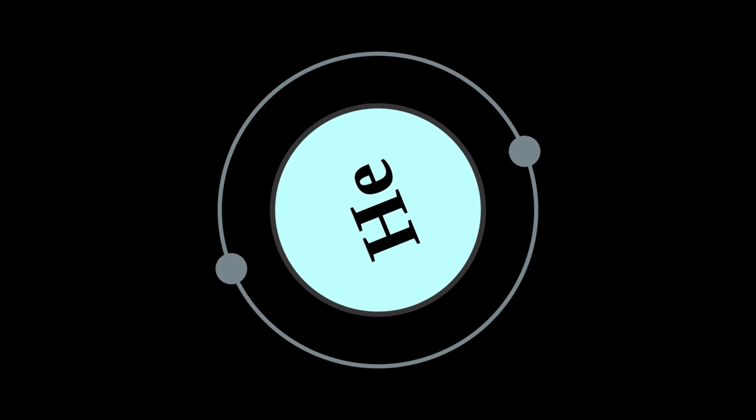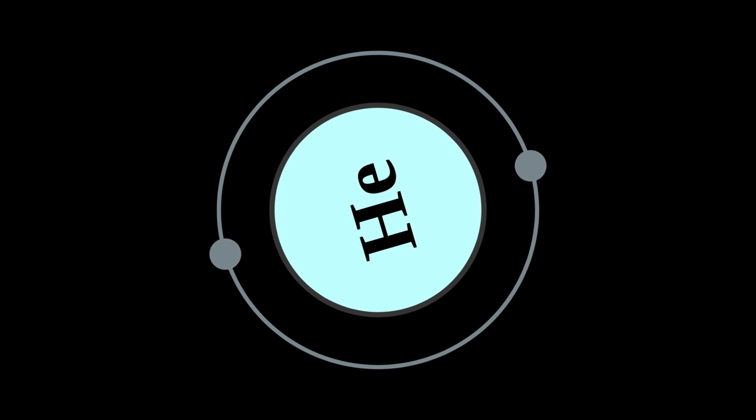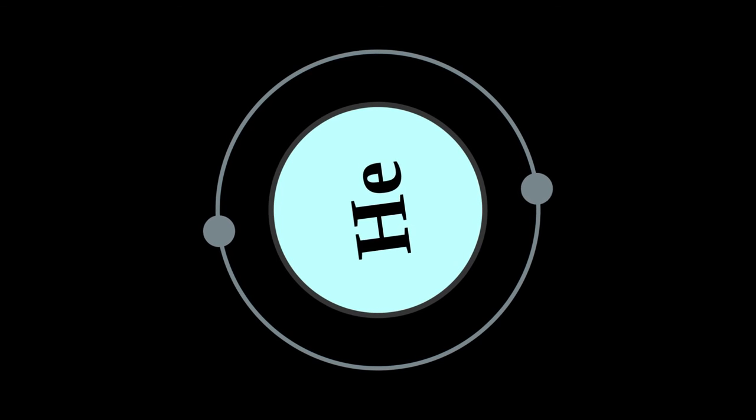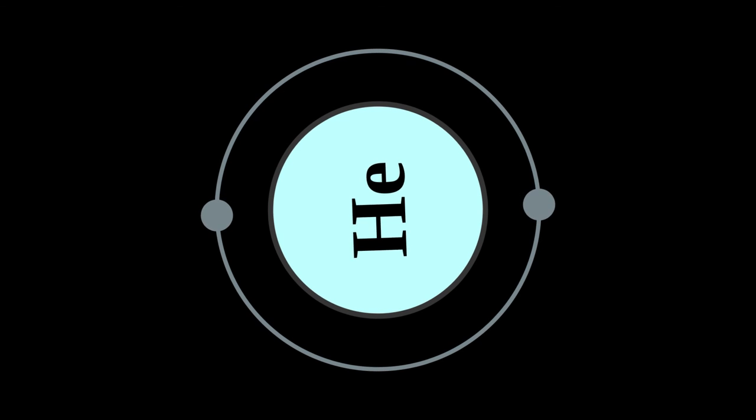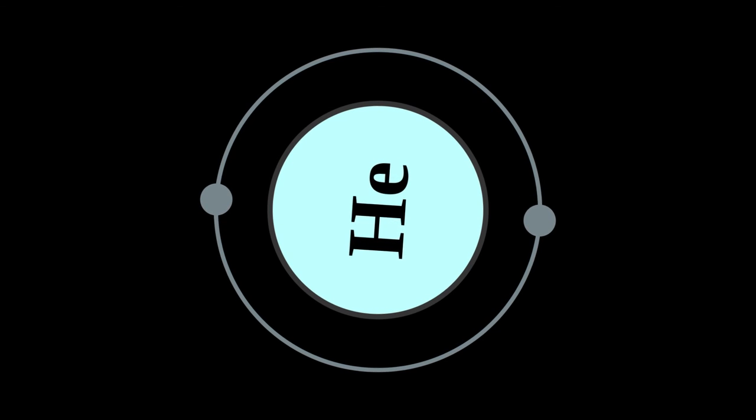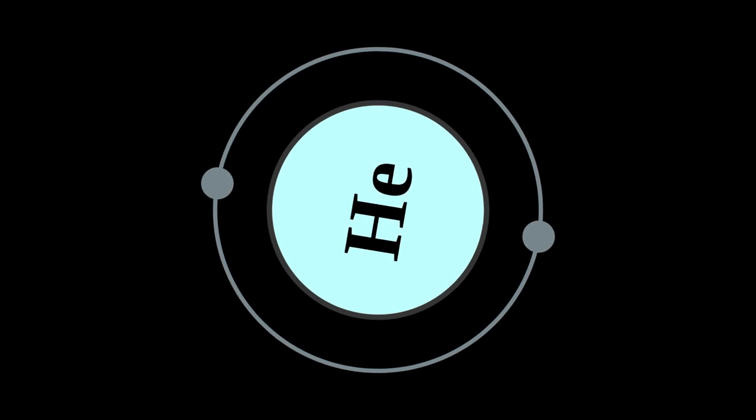This radiogenic helium is trapped with natural gas in concentrations as great as 7% by volume, from which it is extracted commercially by a low temperature separation process called fractional distillation.